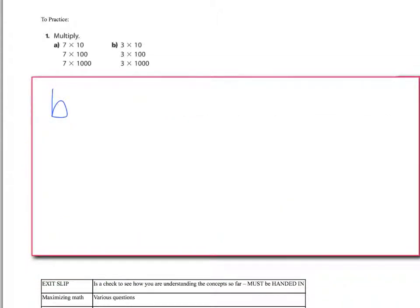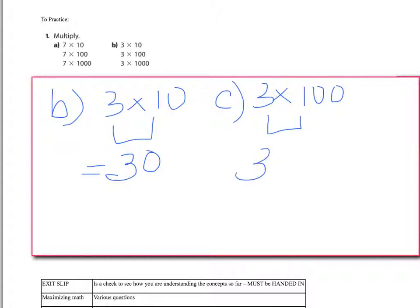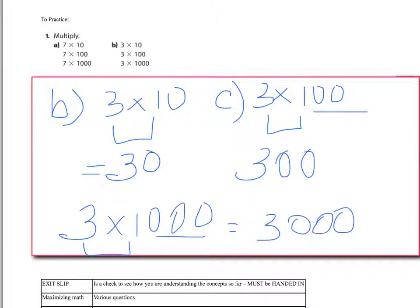Let's take a look at B. 3 times 10. Well, 3 times 1 is 3. How many zeros did I take off? 1. So it equals 30. C. 3 times 100. 3 times 1 is 3. How many zeros did I take off? 2. So I add 2 back on. 3 times 1,000. 3 times 1 is 3. How many zeros did I take off? 3. So I add 3 back on. 3,000.